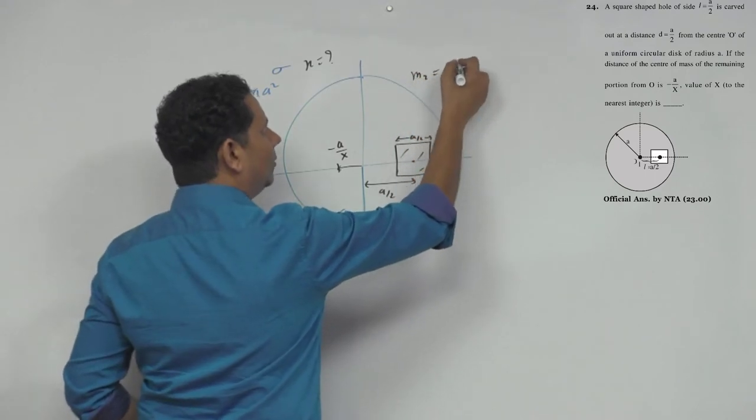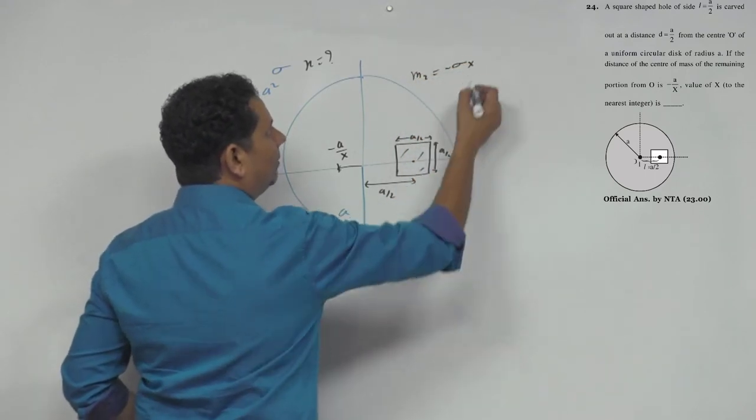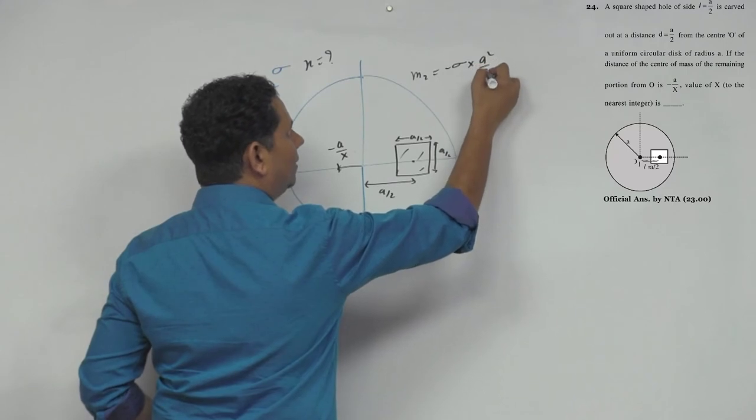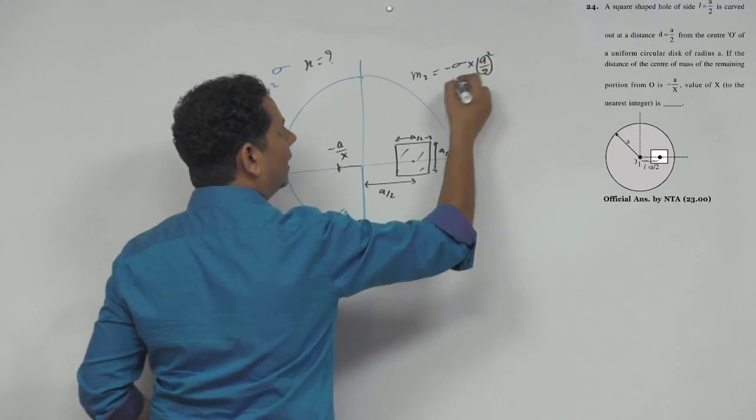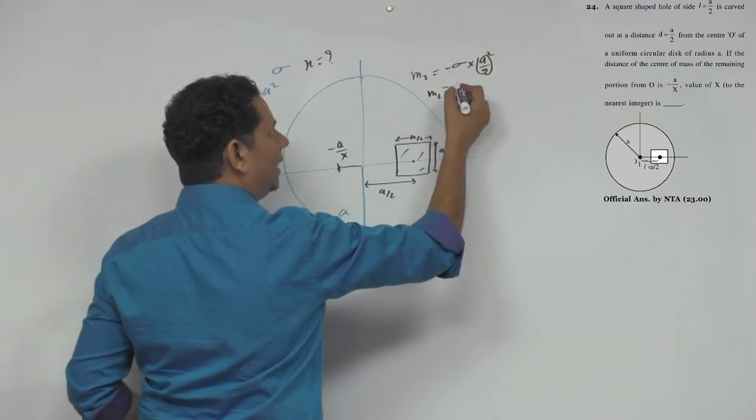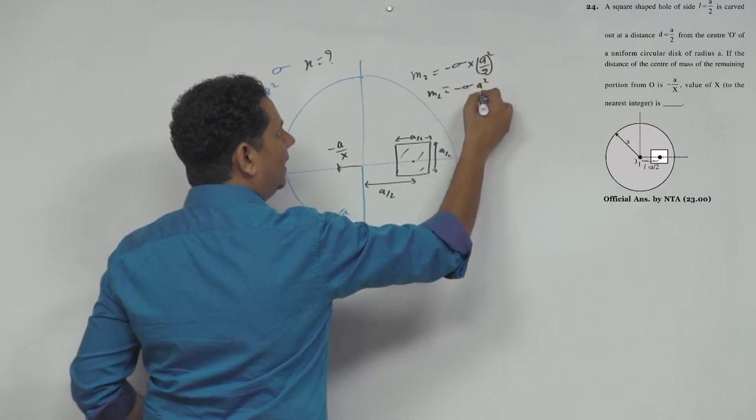That will be equal to minus sigma multiplied by area, that will be minus sigma A square by 4.